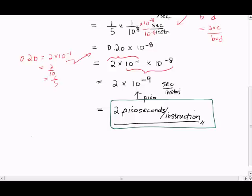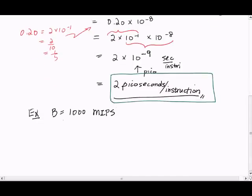Suppose the bandwidth is 1,000 MIPS. Just rewrite that: 1,000 times 1,000,000 instructions per second. In other words, we have 10 to the 9 instructions per second.